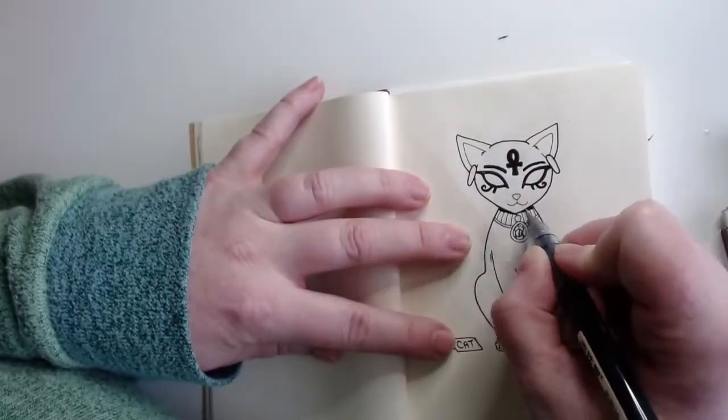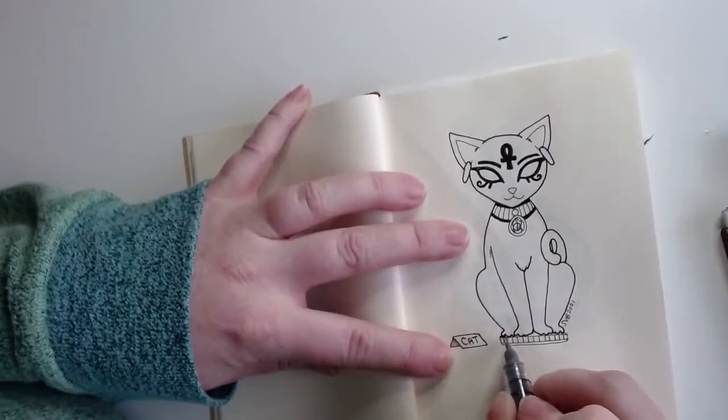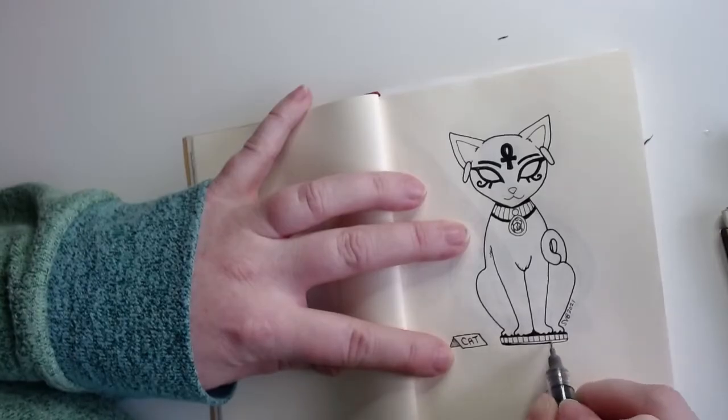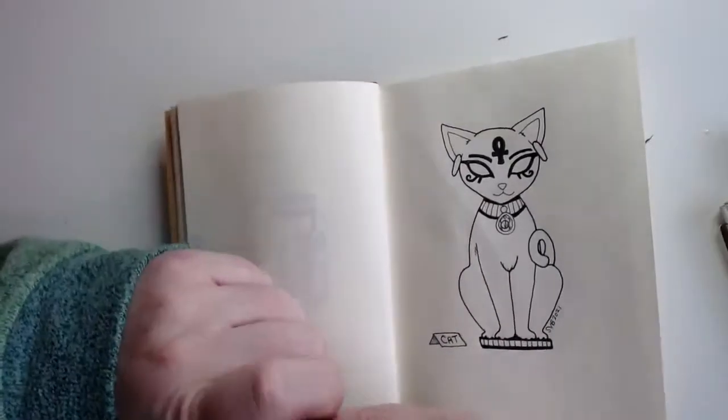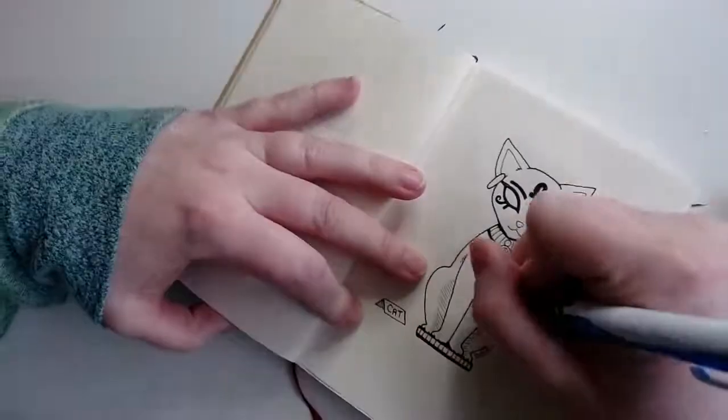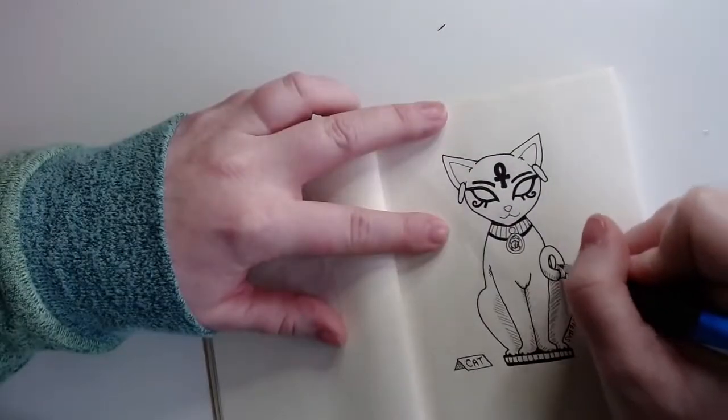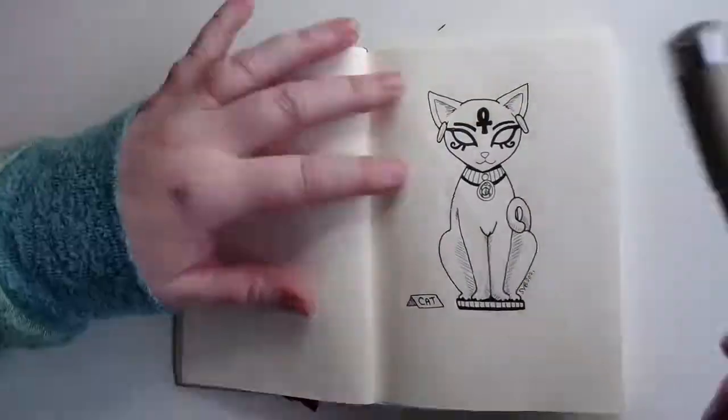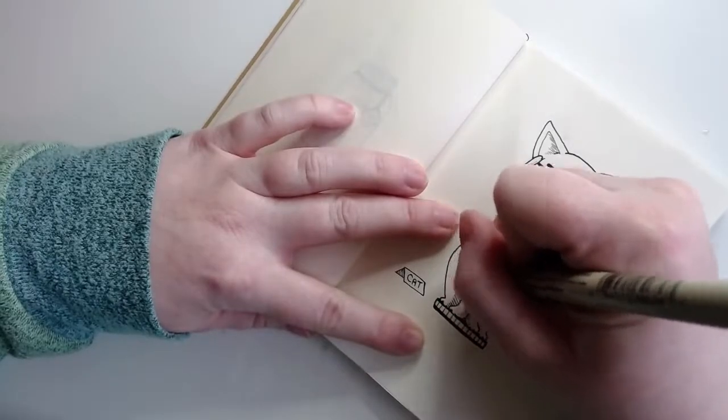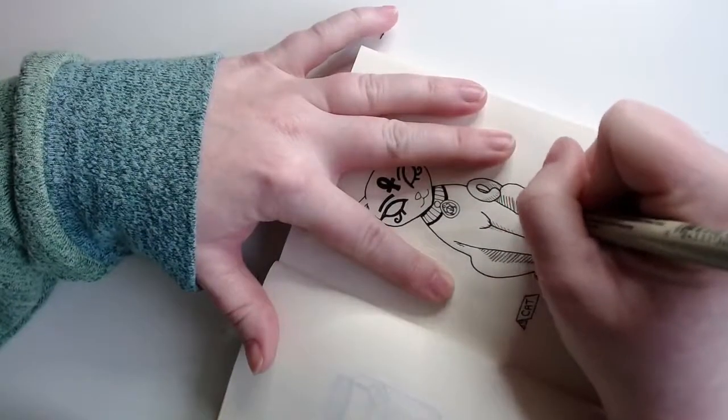I came back over to the cat statue because I realized I hadn't really put any shading on it. So I just penciled it in first before I ink it in. And I will probably have to go over this piece again just because I don't quite like the way the legs look.